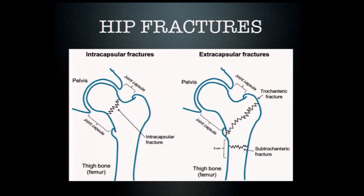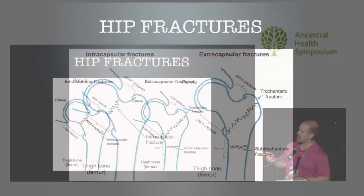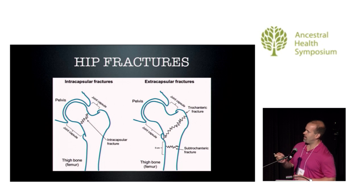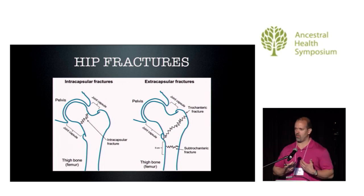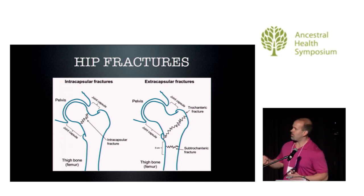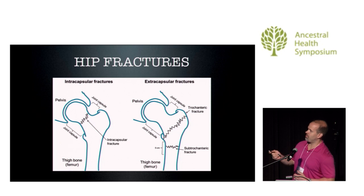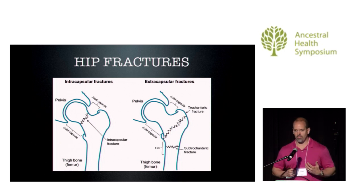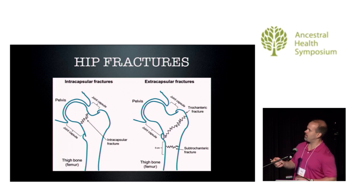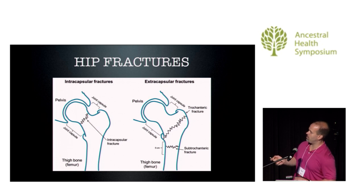When you fracture a hip, you're fracturing the femur bone. A lot of people think grandmother fell and broke her hip on the ice, but when most people discuss a hip fracture, it's actually a fracture at the femoral neck, right below the neck, or right below the trochanter — the subtrochanteric region. Those are the areas referred to as hip fractures.